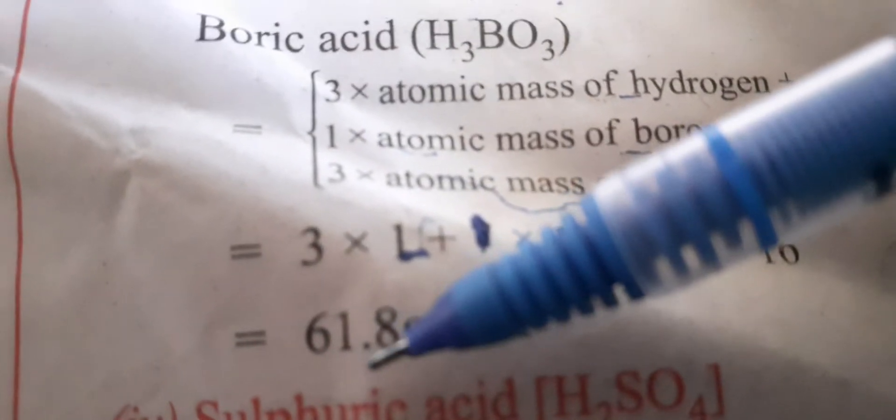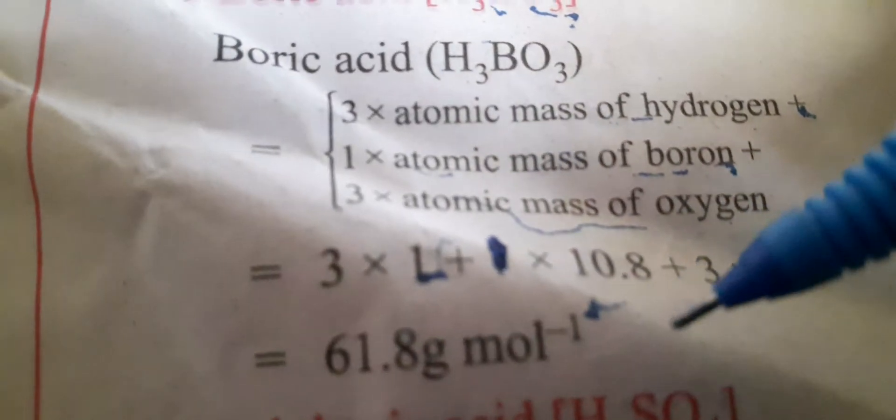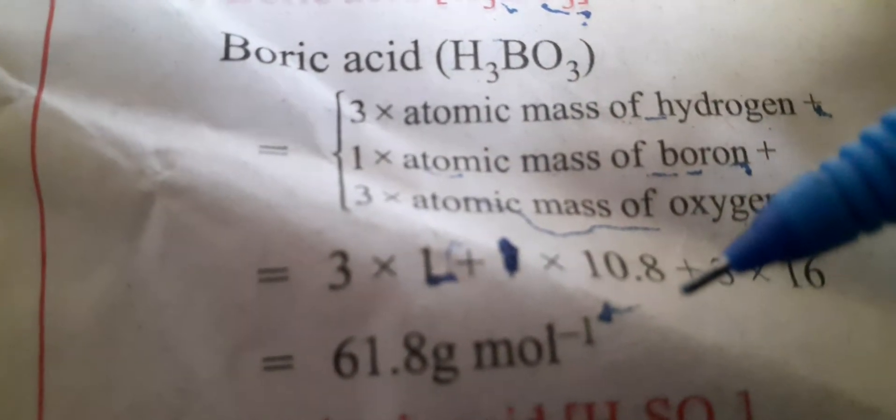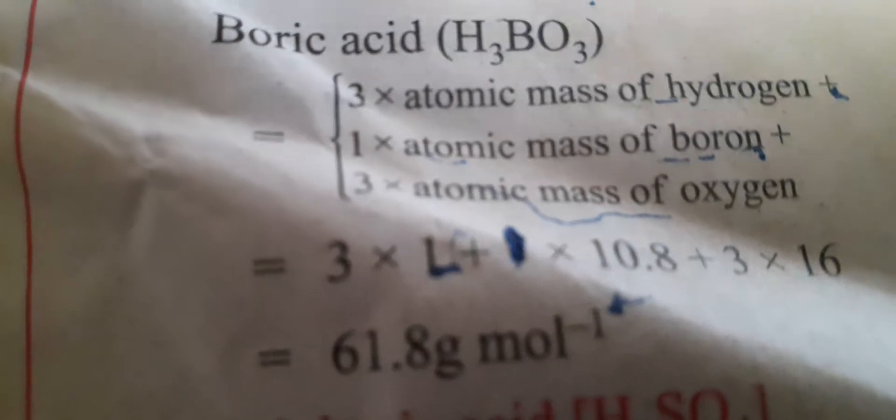So 3 times 16. On multiplying and adding we get 61.8 grams per mole as the molar mass of boric acid.